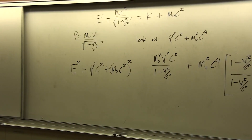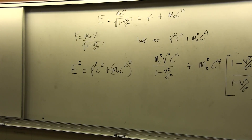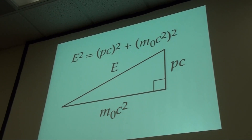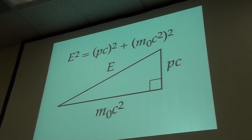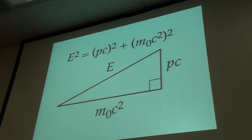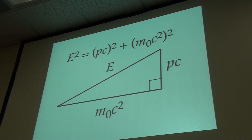This is called the Einstein triangle relationship. We can look at it on the data projector. The energy kind of looks like a Pythagorean sum of pc — momentum times the speed of light — and the rest energy, m-naught c squared. Now, we want to be careful with these kinds of depictions calling it the Einstein triangle, because this makes it appear as though energy is a vector having components of rest energy and pc. But that's not the case here.